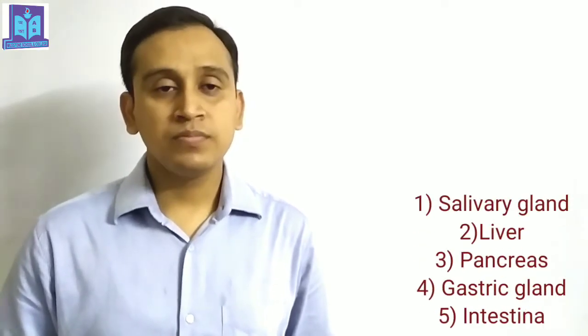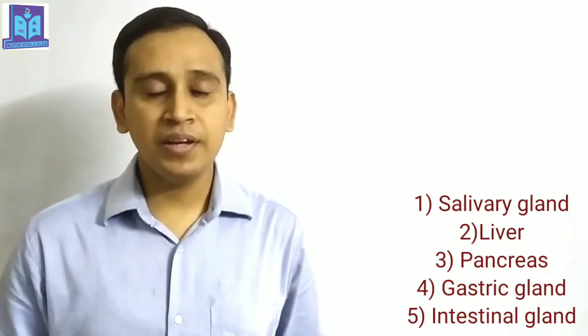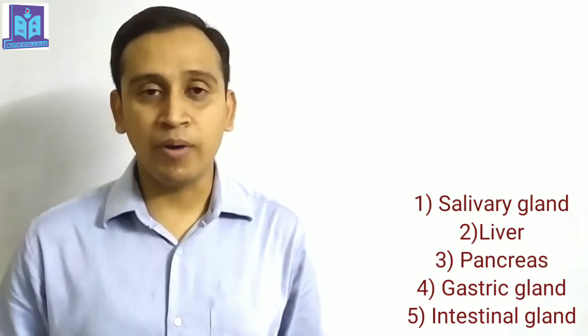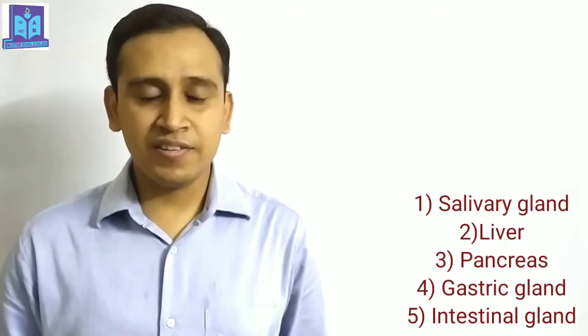Human digestive system consists of two parts: one is digestive tract and another is digestive gland. There are five types of digestive gland found in the human body: number one, salivary gland; number two, liver; number three, pancreas; number four, gastric gland; and number five, intestinal gland.